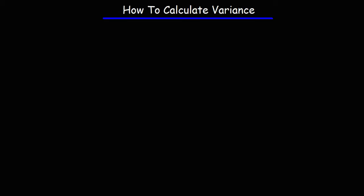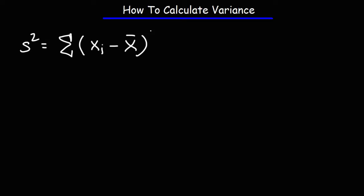In this video, we're going to talk about how to calculate variance. Variance is represented by the symbol S squared. S represents sample standard deviation, but S squared is the variance of a sample. It's equal to the sum of the square differences between each data point and the sample mean, represented by the variable x-bar, divided by n minus 1, where n is the size of the sample.